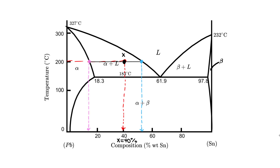Following the handbook notation, we call the intersection with the liquid boundary x_L, and the intersection with the alpha boundary x_alpha. Reading from the diagram, x_L is approximately 54%, and x_alpha is approximately 15%.